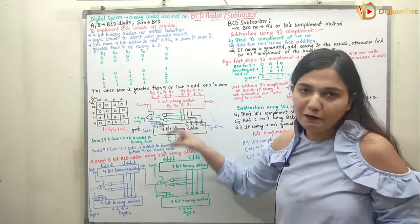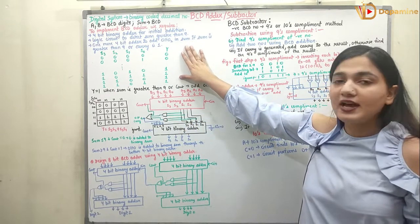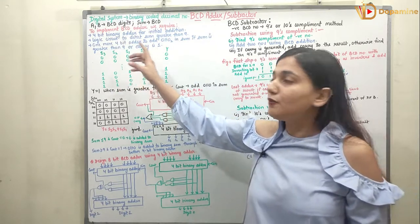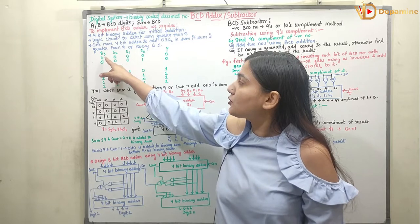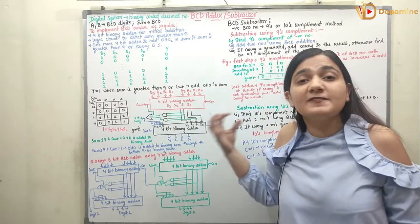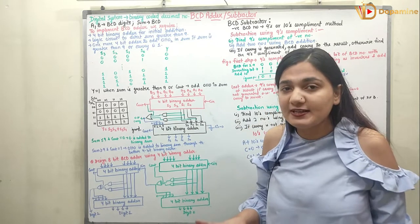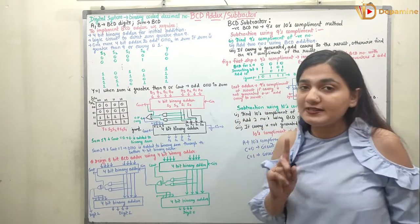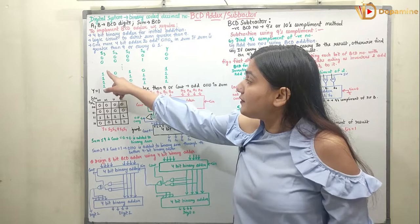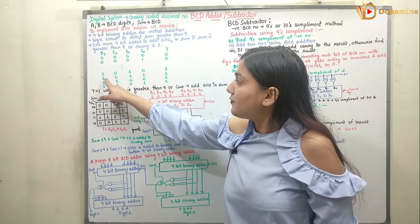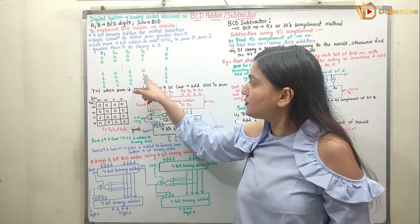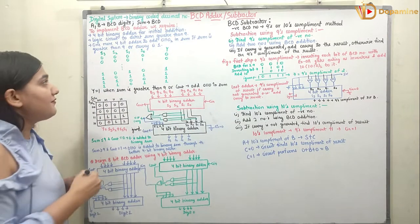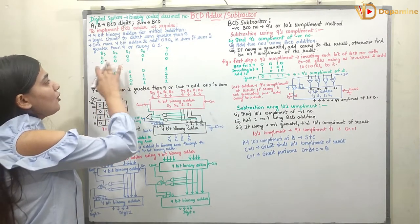Now how does this logic come about? We will understand it with the help of a truth table. In the truth table, a number is a BCD number only when we have inputs from 0 up to 9. Whenever we have 10 as the output it is not a valid BCD number. 10 is not valid, 11 is not valid, 12 is not valid. So whenever we are getting 1010 (10), 1011 (11), 1100 (12), 1101 (13), we are getting output Y as 1.